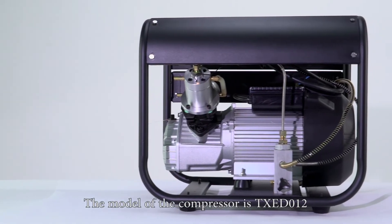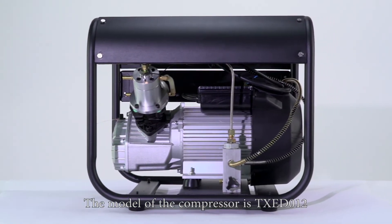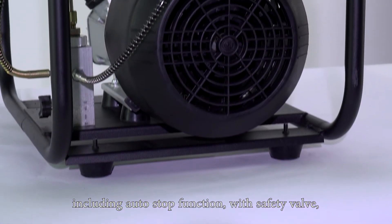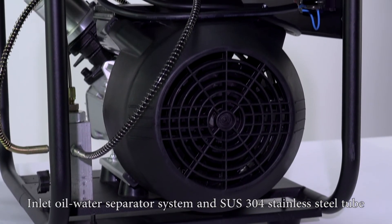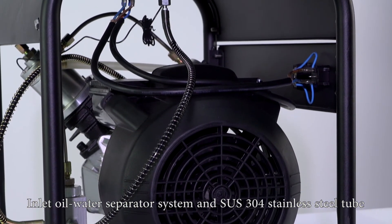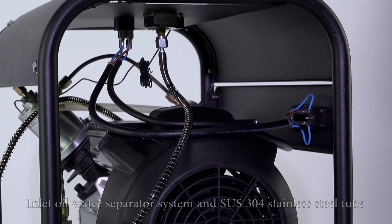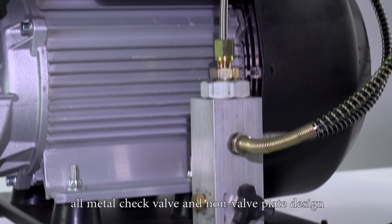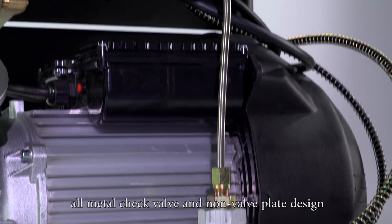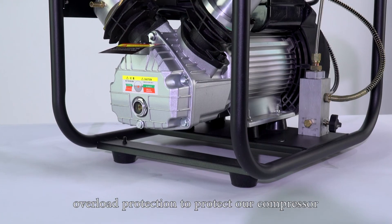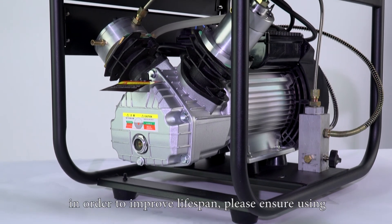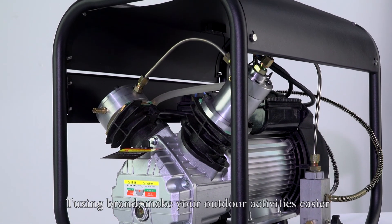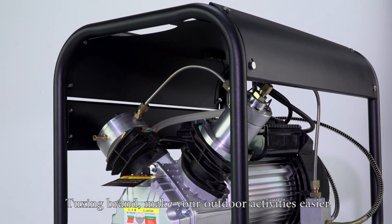The model TXED-012 includes auto-stop function with safety valve, big wheel release screw, inlet oil water separator system, and SUS-304 stainless steel tube. It features good design structure with water and fan cooling, all metal check valve, and non-valve plate design. Overload protection protects the compressor to improve lifespan. Please enjoy using. Tuxing brand makes your outdoor activities easier.